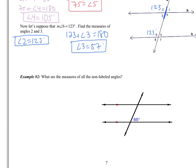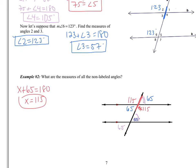Example 2 is more involved — given one angle of 65 degrees, find all the other angles. First, the vertical angle is also 65 degrees. Next, the corresponding angle to that is also 65 degrees by the corresponding angles property, and its vertical angle is 65 as well. To find the supplementary angle: x plus 65 equals 180, so x equals 115. That angle is 115, its vertical angle is also 115, and the corresponding angle to it is 115, along with its vertical. One important note: these properties are only true when the lines are parallel.